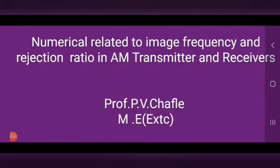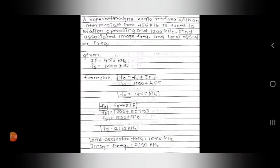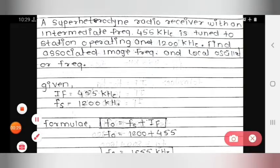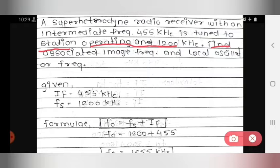Hello everyone. Today we look at numericals related to image frequency and rejection ratio in AM transmitter and receiver. The first numerical: a superheterodyne radio receiver with an intermediate frequency of 455 kilohertz is tuned to a station operating at 1200 kilohertz. Find the associated image frequency and local oscillator frequency.